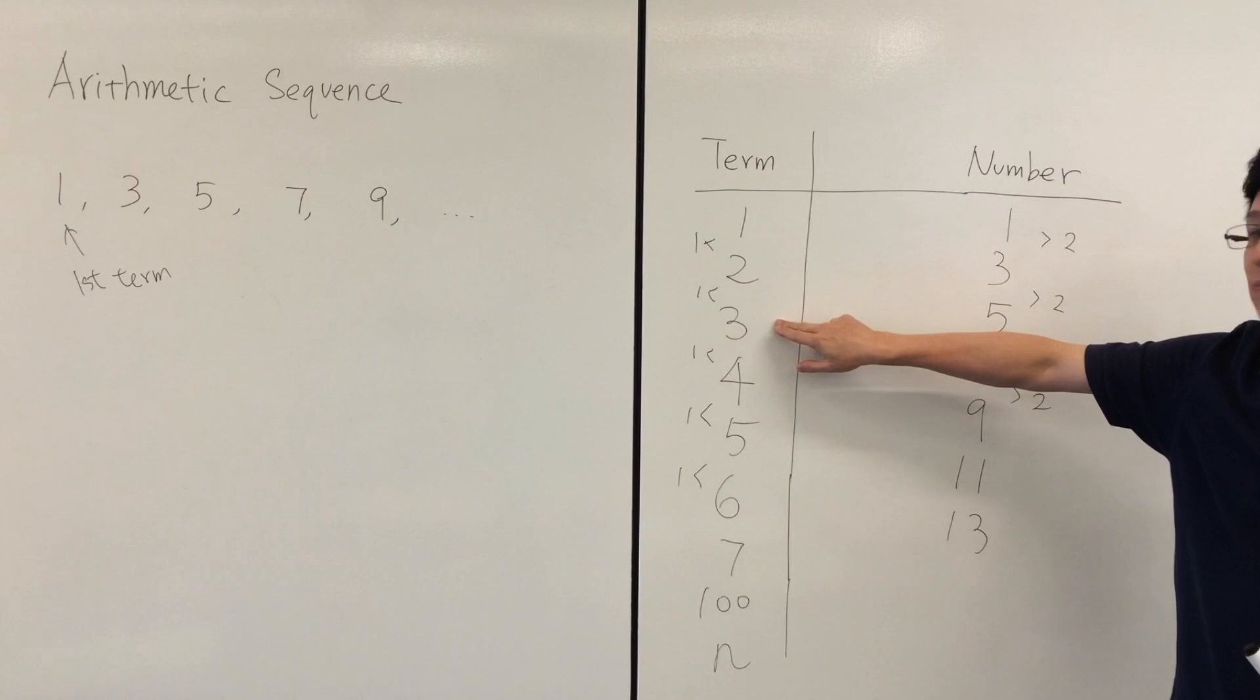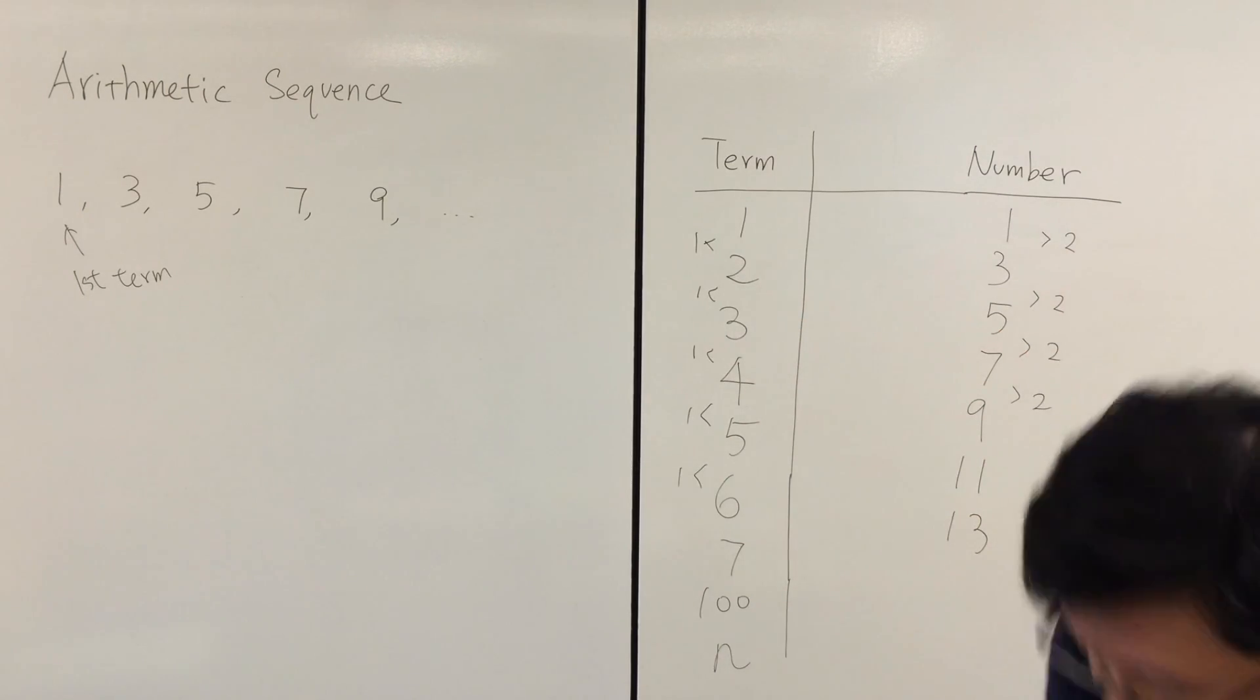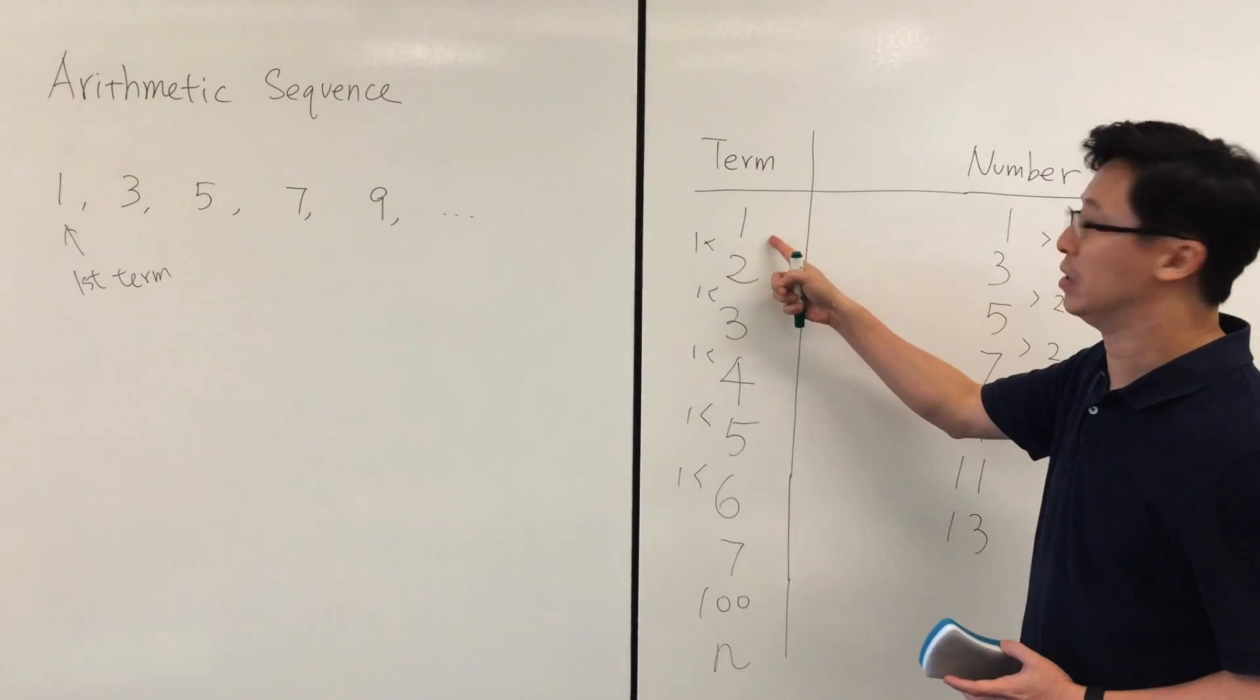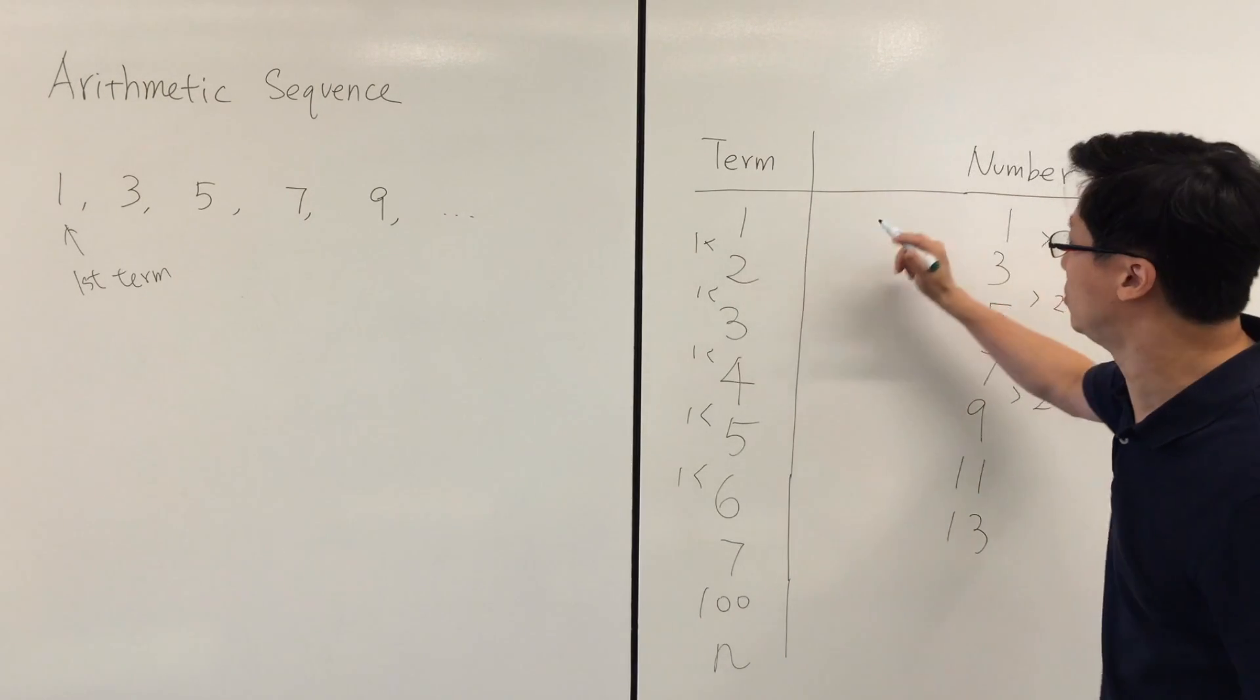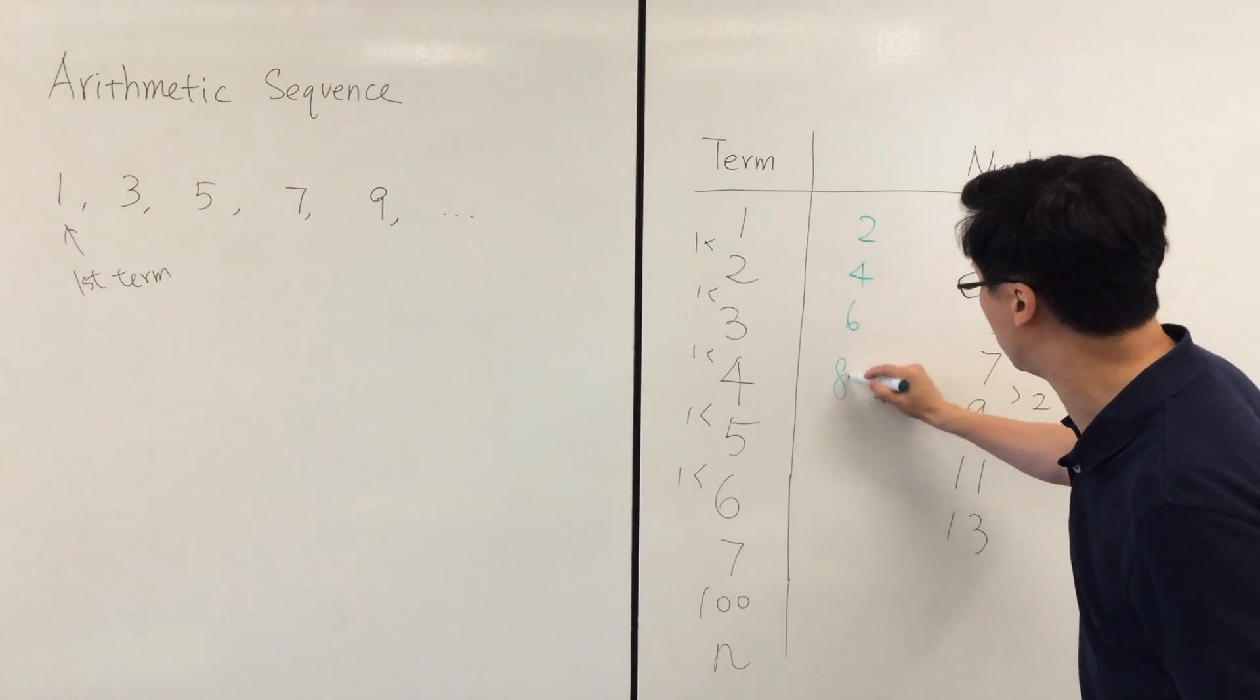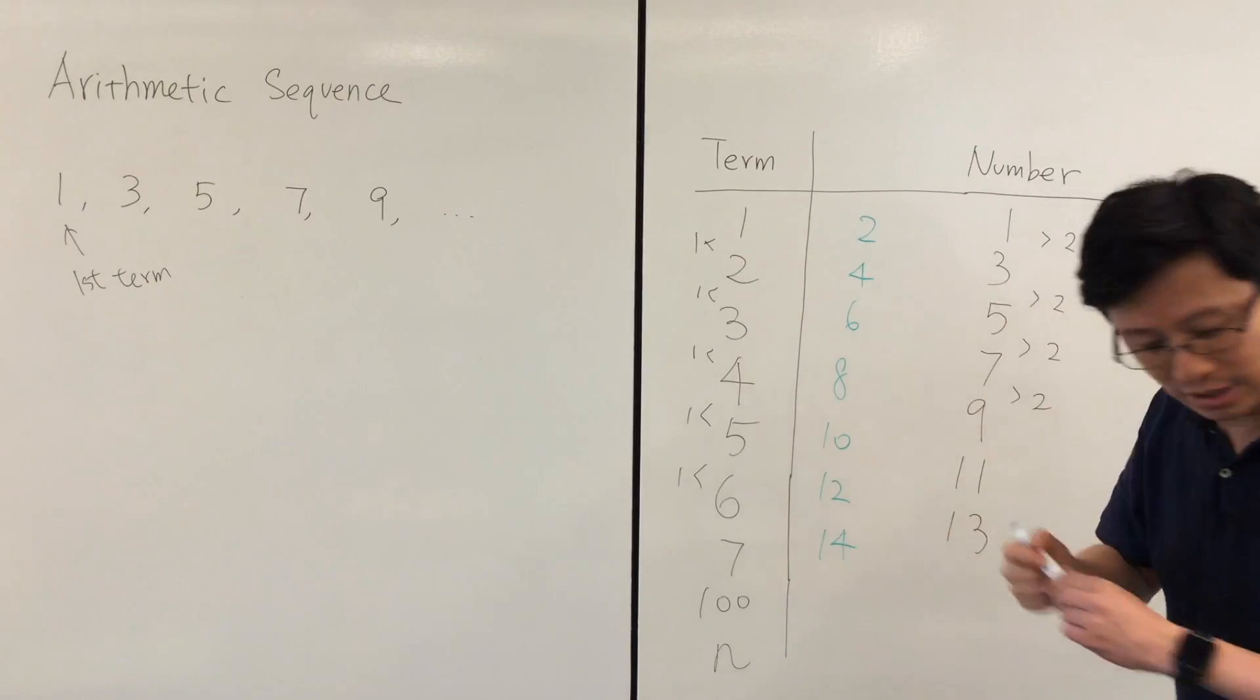We can do something like multiply the term numbers by a factor of 2. So if we multiply each number by 2, we get 2, 4, 6, 8, 10, 12, 14, and so on.